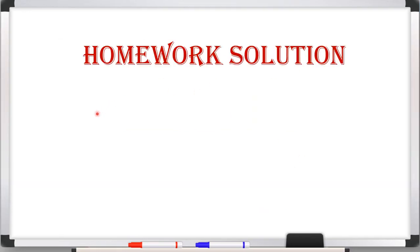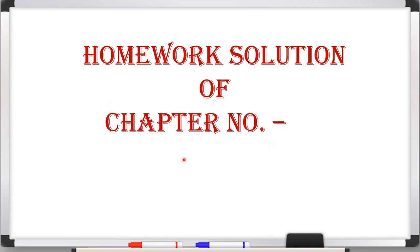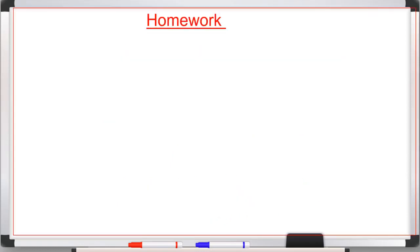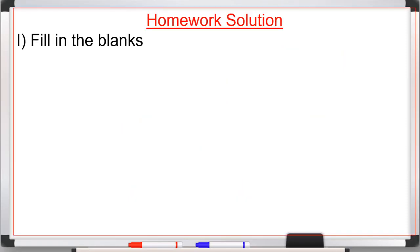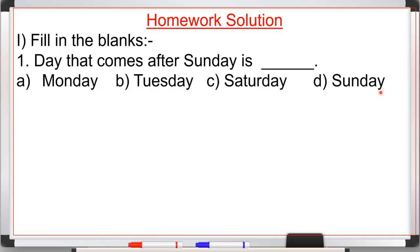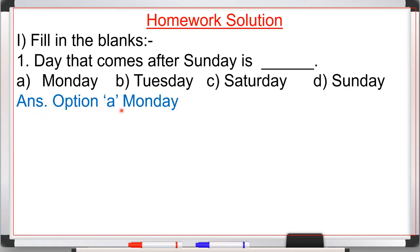Now homework solution of chapter number 19, Time, lecture number 6. In question number one I had given you fill in the blank. First fill in the blank: the day that comes after Sunday is a dash. We have four options — A: Monday, B: Tuesday, C: Saturday, D: Sunday. After Sunday, Monday comes. So option A, Monday, is correct.